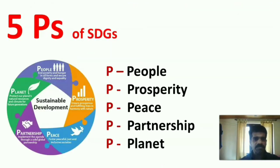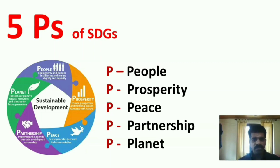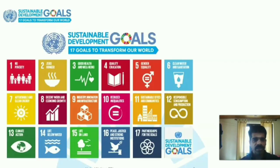The five pieces of Sustainable Development Goals are People, Prosperity, Peace, Partnership, and Planet.